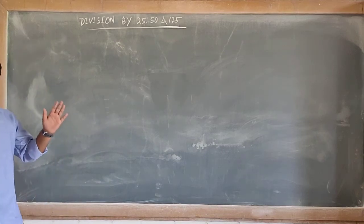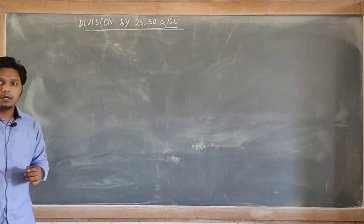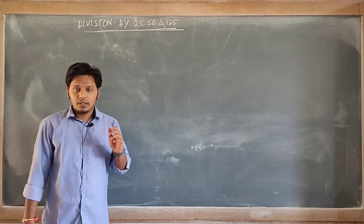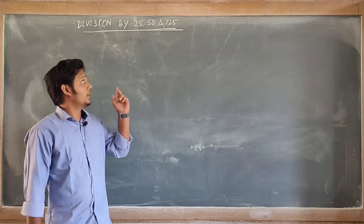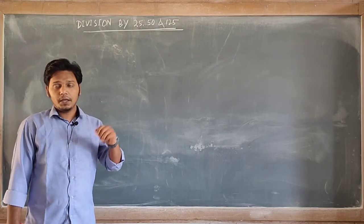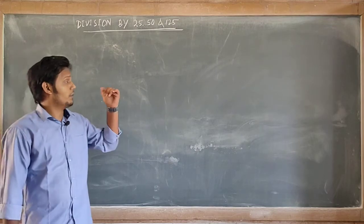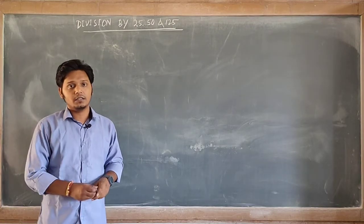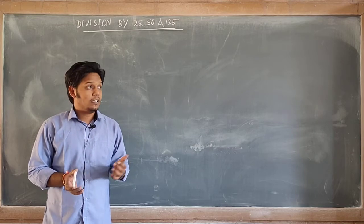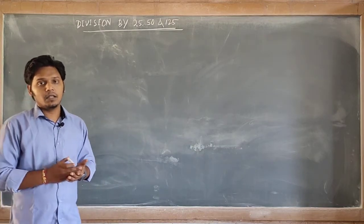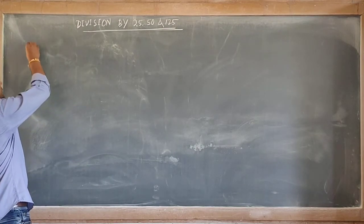Welcome to my English channel. In this video we will be discussing division by 25, 50 and 125 — specifically the numbers which are exactly divisible by 25, 50 and 125. In class 7 we have also read about division of 25, 50 and 125, but that covered all types of numbers. Here we discuss only exactly divisible numbers.